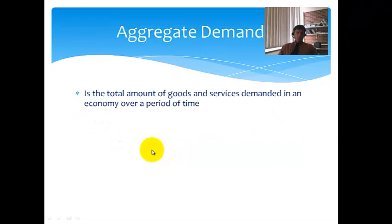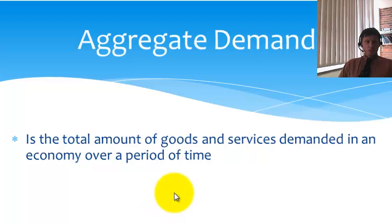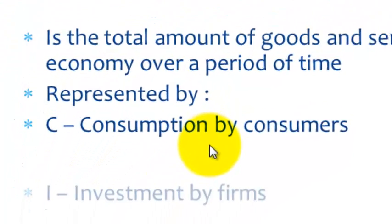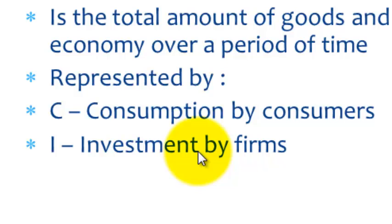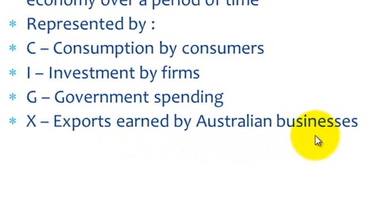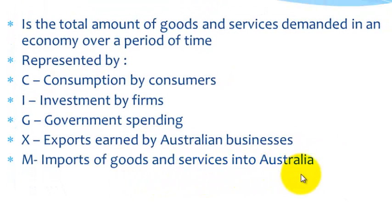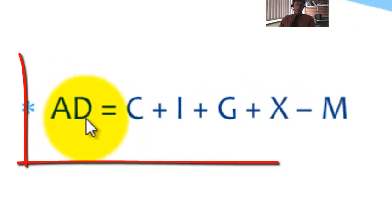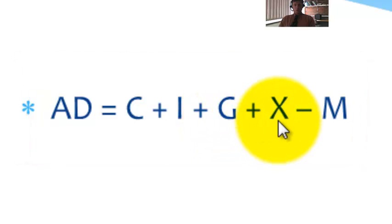Now I must talk to you about aggregate demand. It's a very important part of our expenditure flow that I talked to you about earlier. It is the total amount of goods and services demanded in an economy over a period of time. It's represented by consumption of goods and services by us, the consumers. Investment into capital goods by firms. Amount of government spending. Exports earned by Australian businesses. And imports of goods and services into Australia from overseas destinations. Now that's represented by this particular equation. Aggregate demand is equal to consumption plus investment plus government spending plus exports, but we've got to take away the imports.